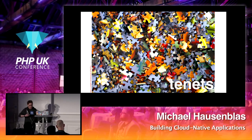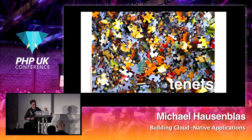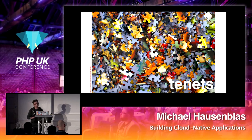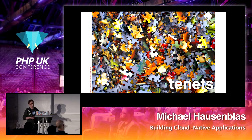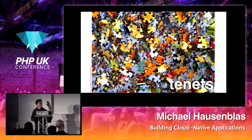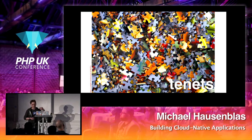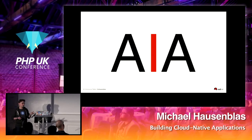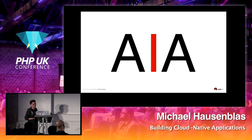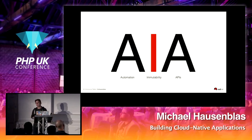These three things — outperforming the competition, shipping around the clock, and togetherness — are the underlying whys for why we're doing what we're doing in cloud native. Now we're moving on to something more tangible. We're talking about the actual tenets of cloud native computing. I came up with this moniker: AIA — automation, immutability, and APIs.